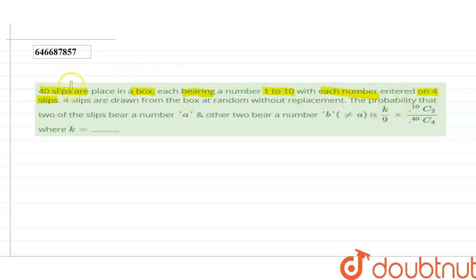Each number is entered on 4 slips. Four slips are drawn from the box at random without replacement. The probability that 2 of the slips bear a number A and the other 2 bear a number B is K/9 × 10C2/40C4. What is the value of K that you have to find out?